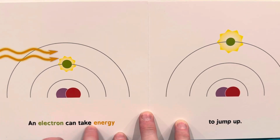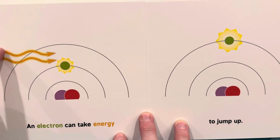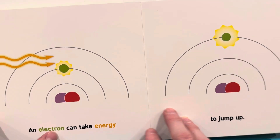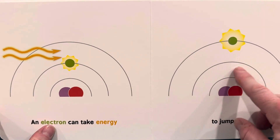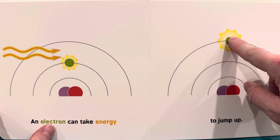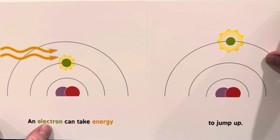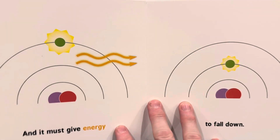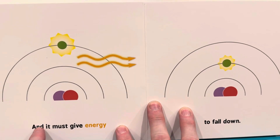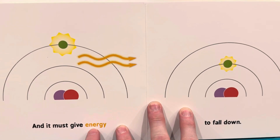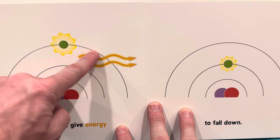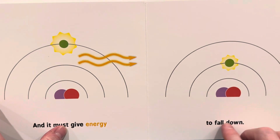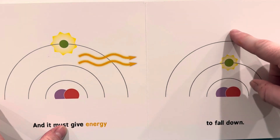An electron can take energy, or jump up. And it must give energy to fall down. Boing.